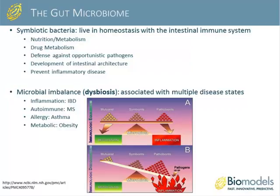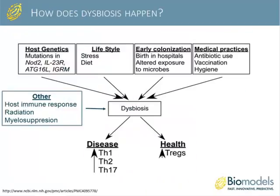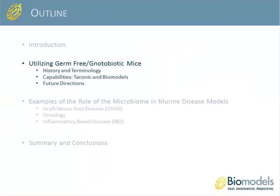In some people, microbial imbalances in the gut can occur, known as dysbiosis. Dysbiosis is associated with multiple disease states including inflammatory disorders like IBD, autoimmune disorders like multiple sclerosis, allergic diseases like asthma, and metabolic disorders like obesity. Genetics plays a role in dysbiosis to some extent, as mutations in genes like NOD2 and the IL-23 receptor are associated with dysbiosis. However, much of dysbiosis is likely caused by circumstances like route of birth, lifestyle, and medical decisions such as antibiotic use, radiation, and myeloid suppression.